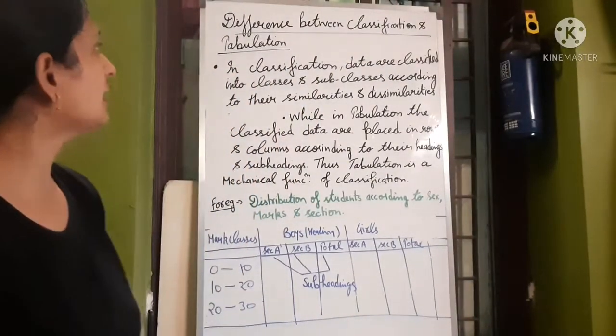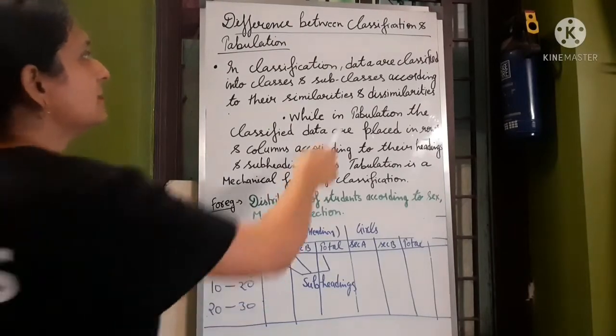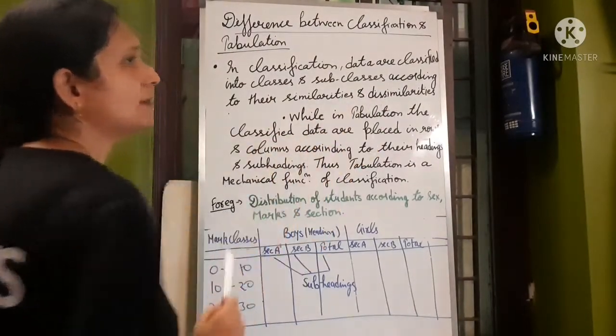What is classification? In classification, data are classified into classes and subclasses according to their similarities and dissimilarities.